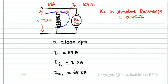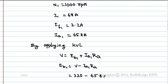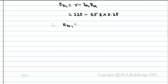By applying KVL to this loop, V equals Eb1 plus Ia1 into RA. From this, Eb1 equals V minus Ia1 into RA. RA is 0.25 Ohms. Therefore, Eb1 equals 203.55V.